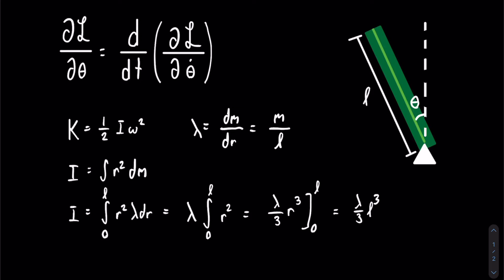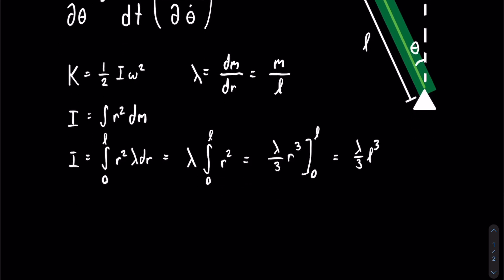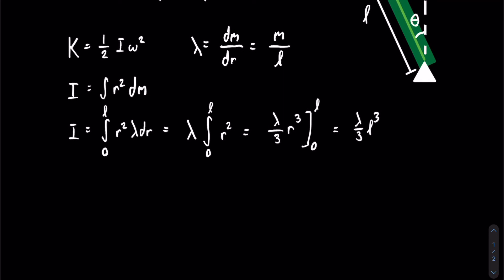Lambda is equal to m over L, so we substitute lambda in our equation, and we get that I is equal to m over 3L times L cubed, which is equal to one-third mL squared.